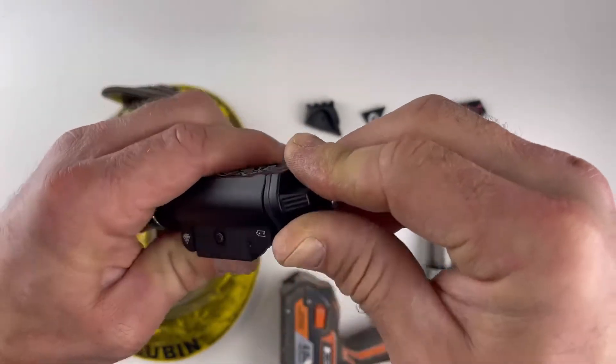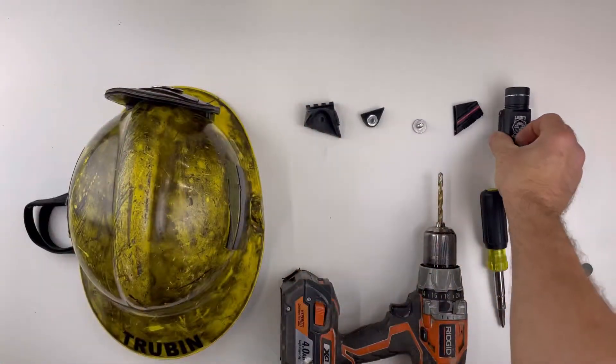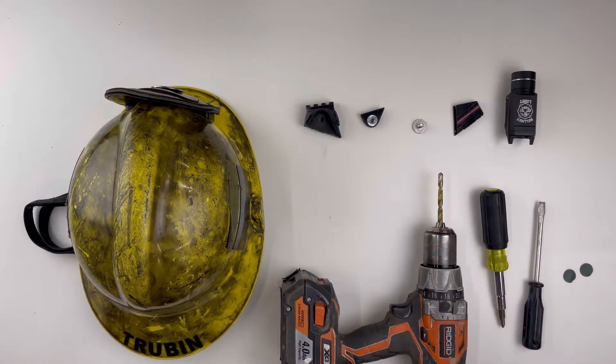Reinstall the cap. Snap it back in. Close the latch. Let's install the mount now.